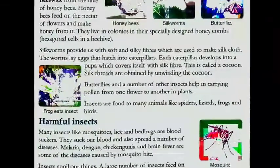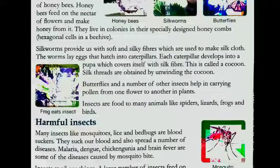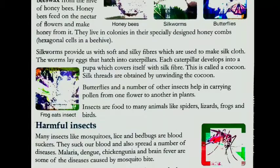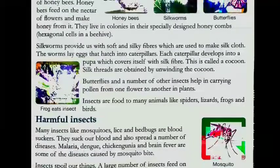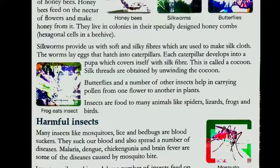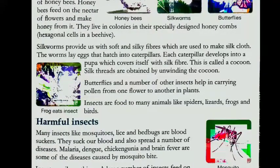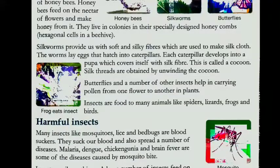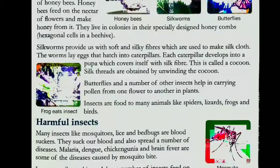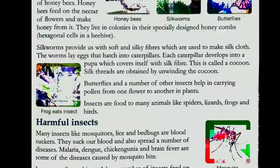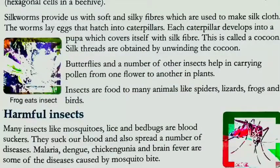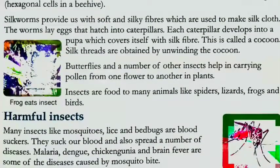Ab hum baat karte hai silk worm ki. Silk worm jo hota hai, jise hum resham ka kira bolte hai, woh aapko ek soft silky fiber provide karti hai. Silk worm sirf 2 se 3 din tak zinda rehta hai. Itne hi time mein woh kam se kam 300 se 400 unde, yaani ki woh apne unde de deta hai. The worms lay eggs that hatch into caterpillars.